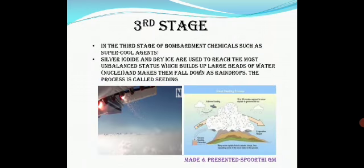In the third stage, bombardment chemicals such as a supercool agent are used. Silver iodide and dry ice are also used to reach the unbalanced stage of the cloud and build up large beads of water, making them fall down as raindrops. This process is called seeding.